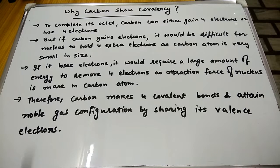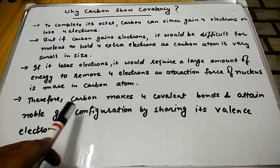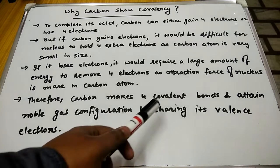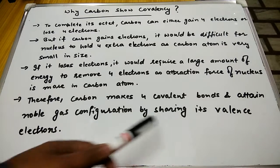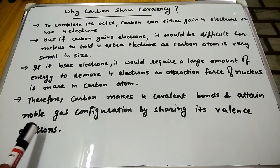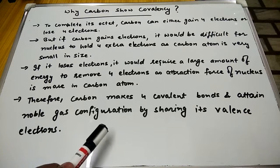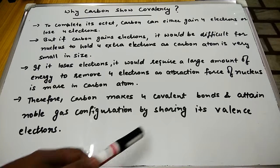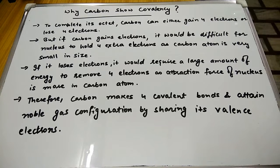Therefore, carbon makes four covalent bonds and attains noble gas configuration by sharing its valence electrons. That is why it shows covalency.